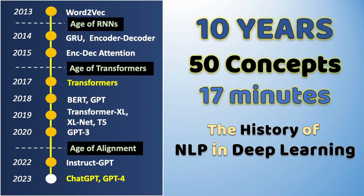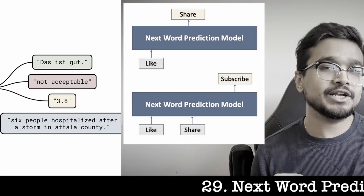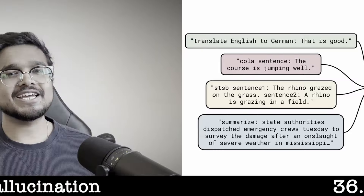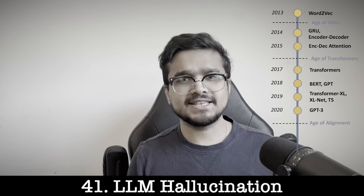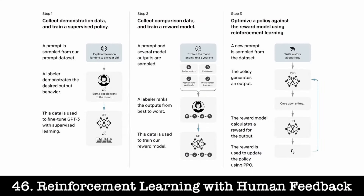If you followed these last three videos you have all the tools you need to understand transformers and attention from first principles. If you're interested in learning more, check out the history of NLP video which covers derivative work from transformers like BERT, GPT, T5, and XLNet.